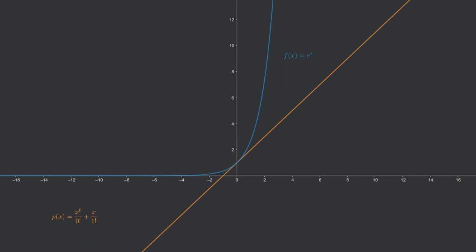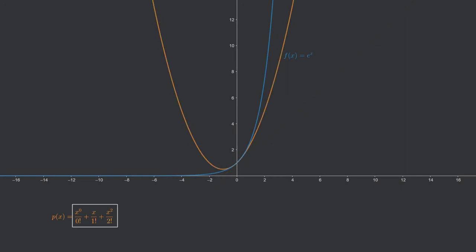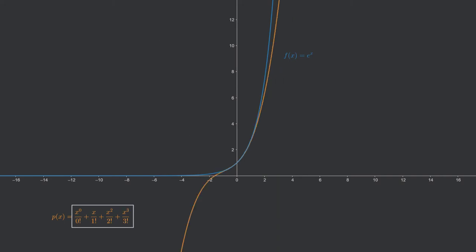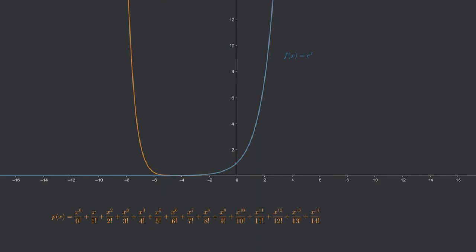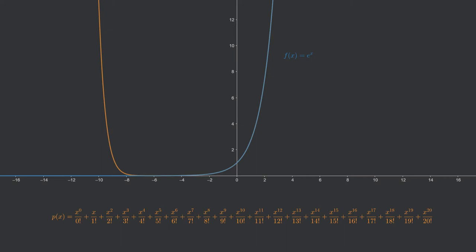The next polynomial in the sequence, the polynomial of second degree, has a formula which actually equals x squared over 2 plus x plus 1. The underlying principle of this formula starts to reveal itself. Looking at the polynomial of third degree, the principle of how the formula evolves is clear, and we can animate both the curves and the formula together. Let's stop here at the 21st summand, although this principle can continue forever.